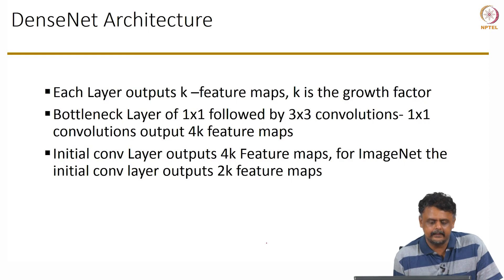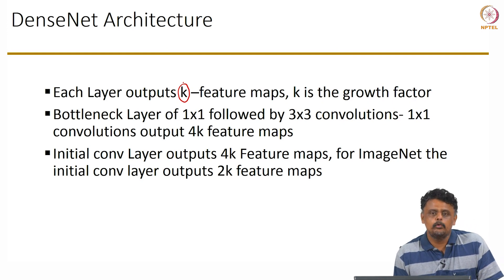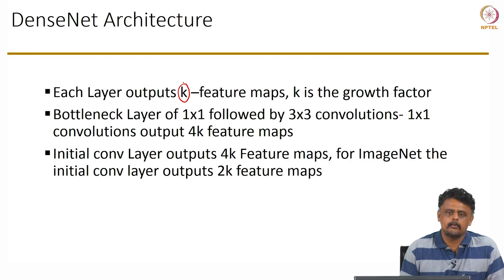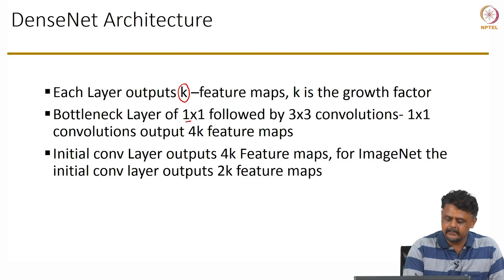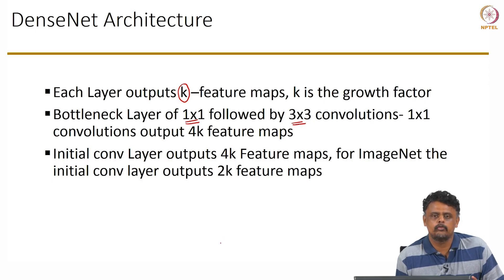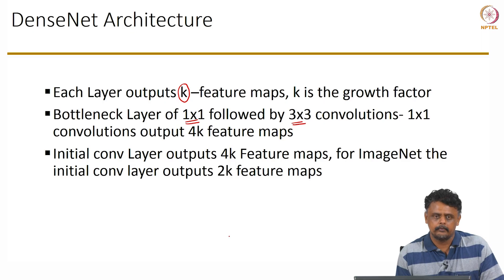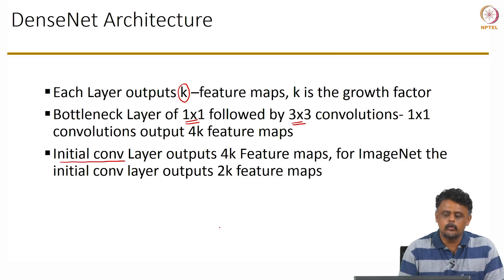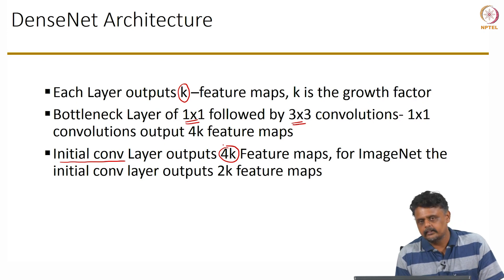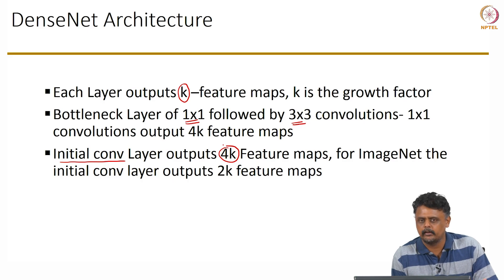Each layer outputs K feature maps — that is the growth factor. They also use the bottleneck concept, a 1×1 convolution followed by a 3×3 convolution. Every 1×1 convolution outputs about 4K feature maps, which are then operated on by the 3×3 convolution. Before the input goes to a dense block, there is an initial convolution outputting about 4K feature maps. Typically the networks designed for ImageNet as well as CIFAR have about 3 to 5 dense blocks with a growth factor ranging from 24 to 32.